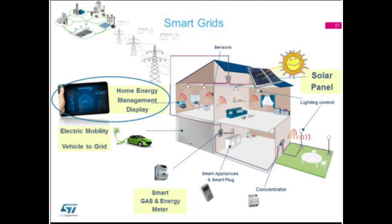From this picture we can easily understand the smart grid. It includes home energy management display, IoT technologies, electric mobility vehicle-to-grid, smart gas and energy meters, smart appliances, and smart plugs. Today, with the help of voice commands, we can switch on or off the light. Also, contractor lighting control, solar panels, and sensors are all part of the smart grid.